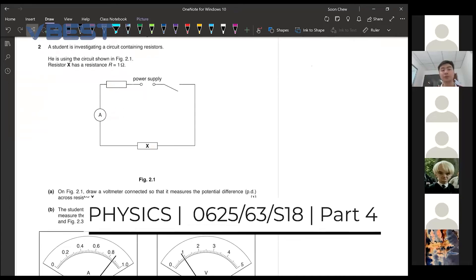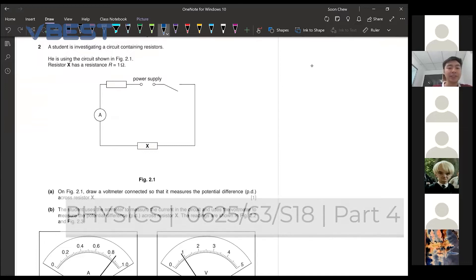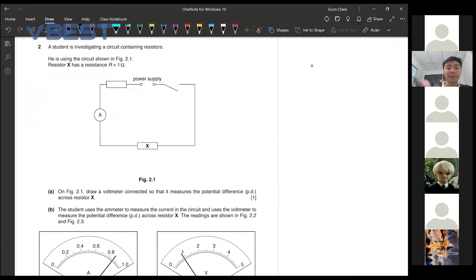Now for part 2, a student is investigating a circuit containing resistor. Now he is using the circuit in figure 2.1. Resistor X has a resistance of 1 ohm. They are telling you that right now.